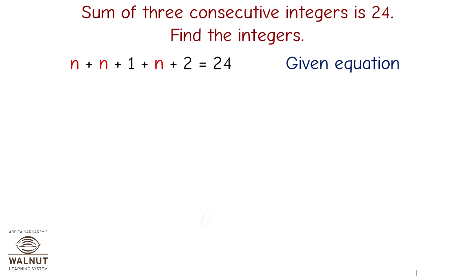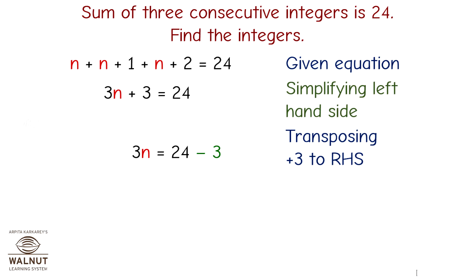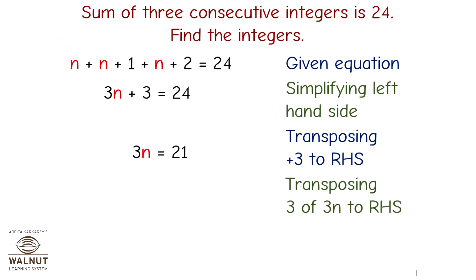Let us solve this equation. Simplifying the left-hand side gives 3n plus 3 equals 24. Transposing plus 3 to the RHS: therefore 3n equals 24 minus 3, so 3n equals 21. Transposing the 3 of 3n to the RHS: therefore n equals 21 upon 3.